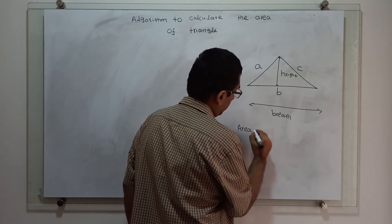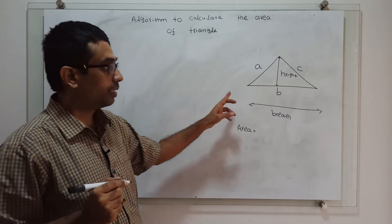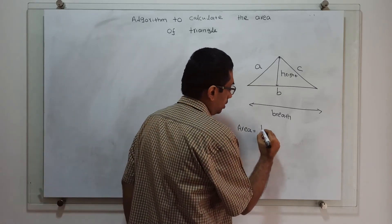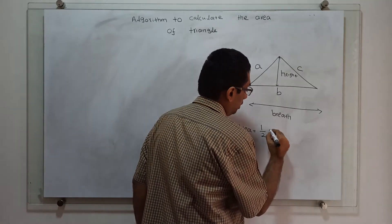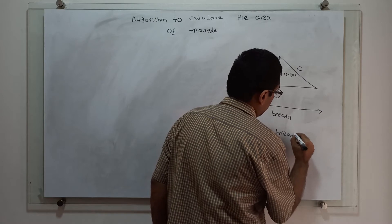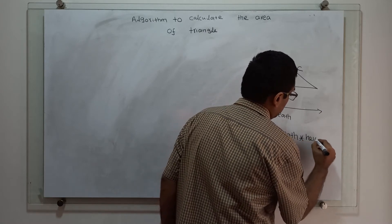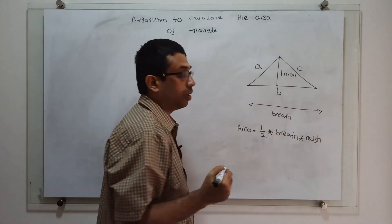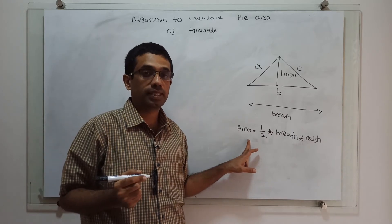How to calculate the area of the triangle? To calculate the area of the triangle, we have to use the formula: half into breadth into height. In this way we calculate the area of the triangle.